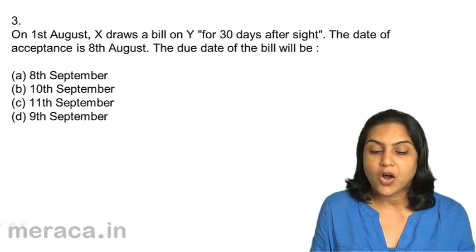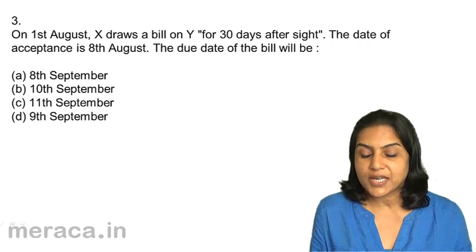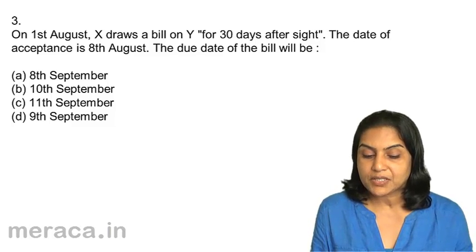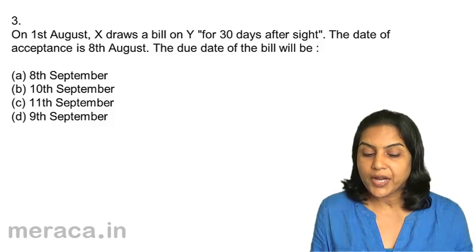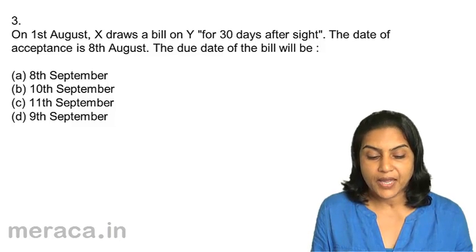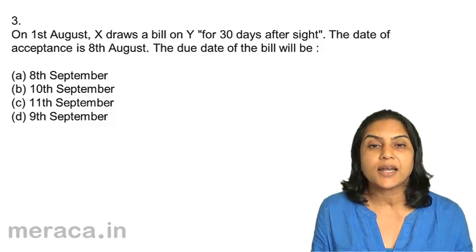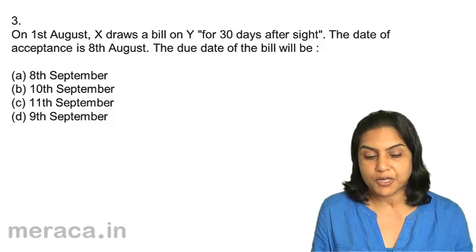Question 3: On 1st August, X draws a bill on Y for 30 days after sight. The date of acceptance is 8th August. The due date of the bill would be: A. 8th September, B. 10th September, C. 11th September, D. 9th September.